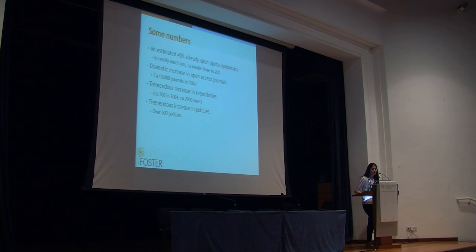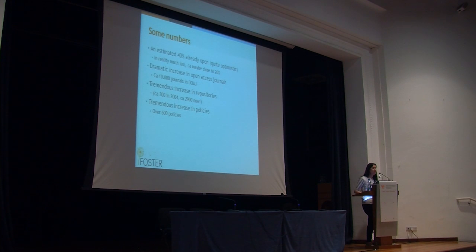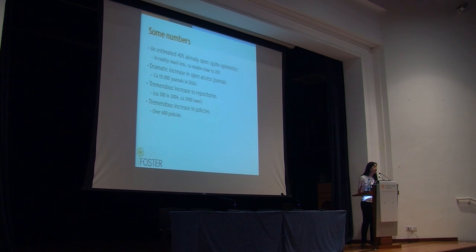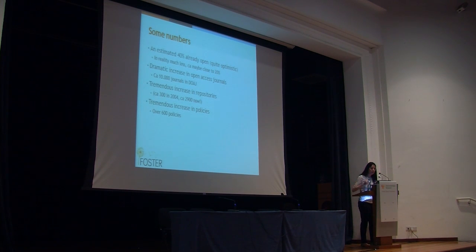Just some numbers: an estimated 40% of all publications are open — this is probably an optimistic calculation that includes internet pages and everything. If we define open access in a stricter sense, it's really much less — close to 20%, maybe even less for good structured publications and repository work. There is a dramatic increase in open access journals, and open access publishing is now about 13% of the share of academic publishing, gradually growing. The Directory of Open Access Journals lists 10,000 journals at an ever-growing rate. There are about 3,000 institutional and subject repositories all over the world now, and increasing policies.